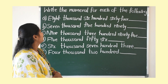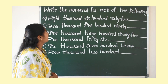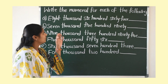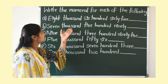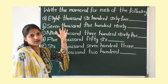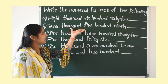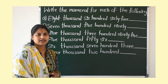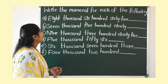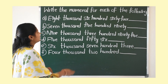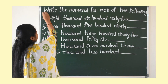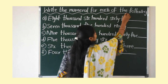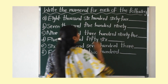Here we have the first bit: write the numerals for each of the following. What has been given here is the number name, so we have to write the numeral — that is, the number. Write the numeral for each of the following.